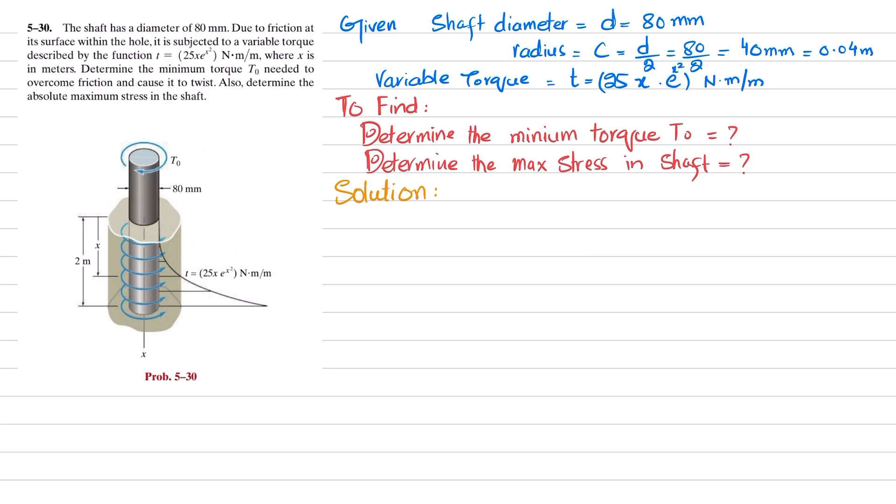Diameter is given as 80 mm, so radius will be 40 millimeters, which is 0.04 meters. Variable torque is given like this. Let's start with the solution. If you apply this torque T₀, there is a resistance in this hole.